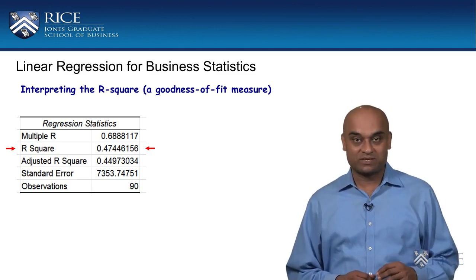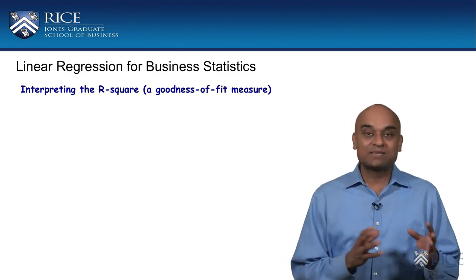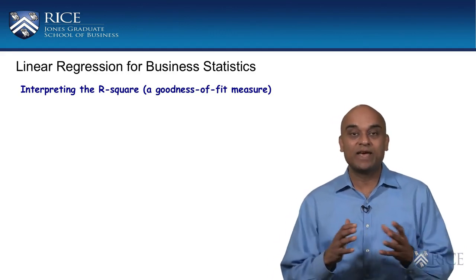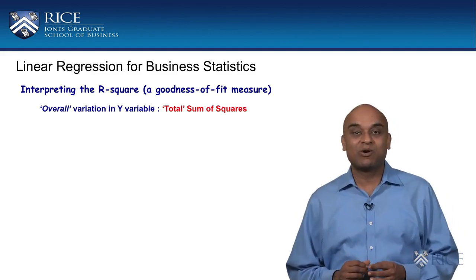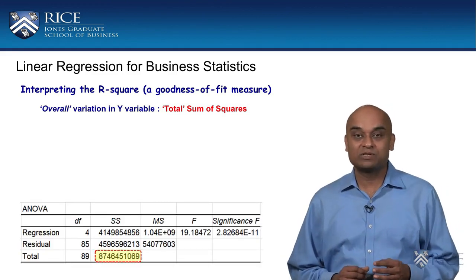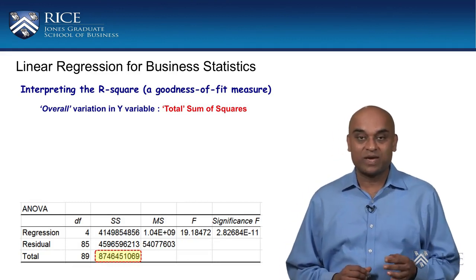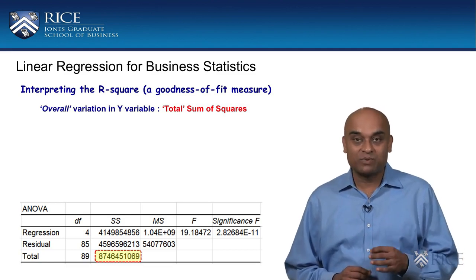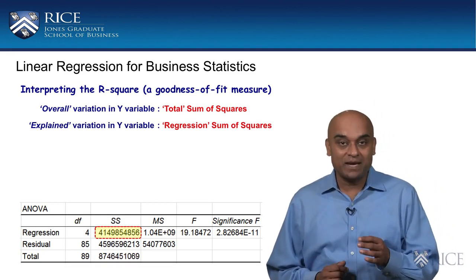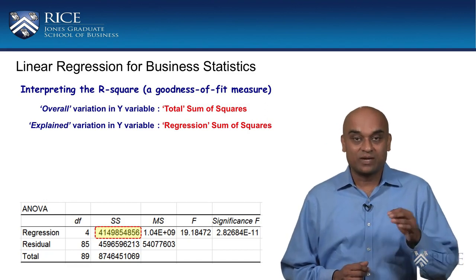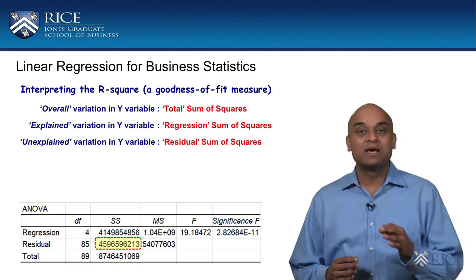Let us first understand how this measure is constructed. The aim of a regression model is to explain as much as possible the variation in the Y variable using the set of X variables. A measure of the overall variation in the Y variable is the total sum of squares, which is produced in the regression output. Part of this variation gets explained by our regression model — that part is known as the explained or regression sum of squares. The remaining part goes unexplained and is known as the unexplained or residual sum of squares.